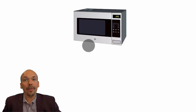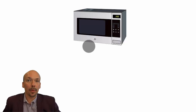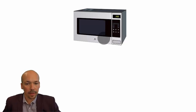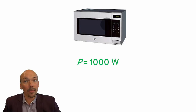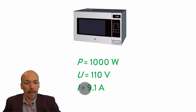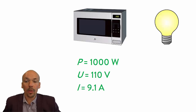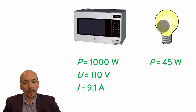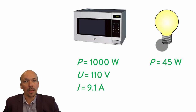Resistance — everything which uses electricity has a resistance to electricity. If we look at this microwave, it has a power of 1000 watts, it uses a voltage of 110 volts and a current of 9.1 ampere. And if we look at this light bulb, it has only 45 watts, so it needs a lot less energy.